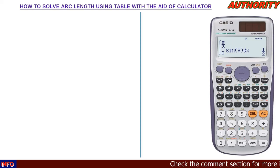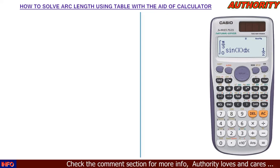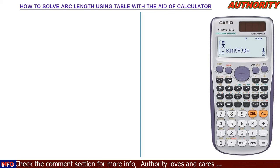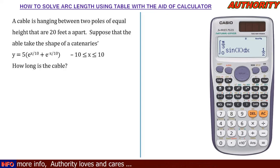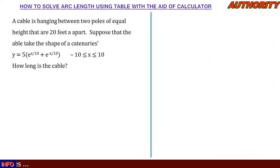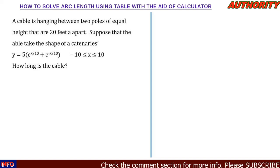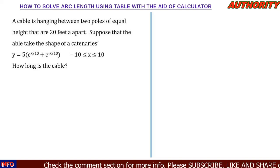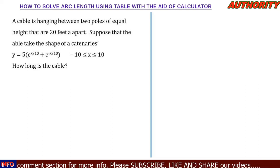We know that we can use a calculator to input integration directly, but we are not going to use the calculator to solve directly — it's going to help us with the table. Now let's look at the two questions we're going to consider. Number one: a cable is hanging between two poles of equal height that are 20 feet apart. Suppose the cable takes the shape of a catenary y = 5(e^(x/10) + e^(-x/10)) from the interval −10 ≤ x ≤ 10. How long is the cable?